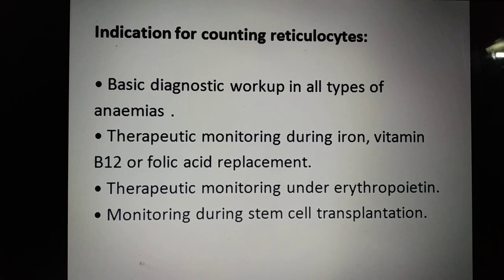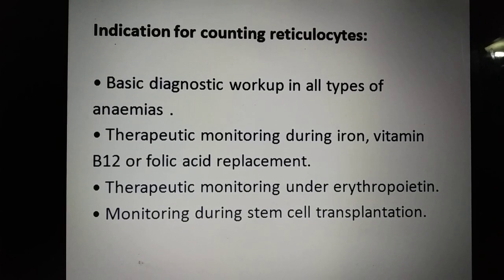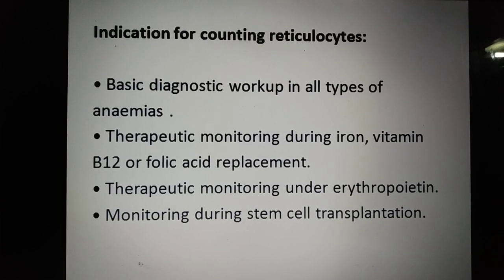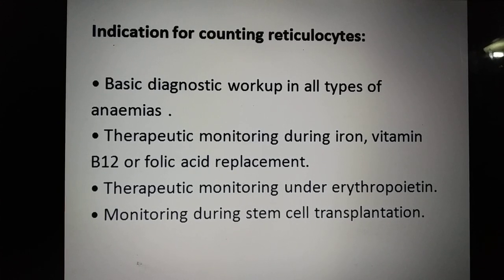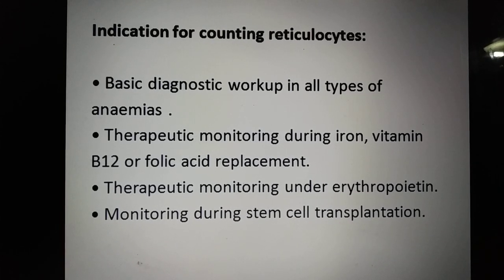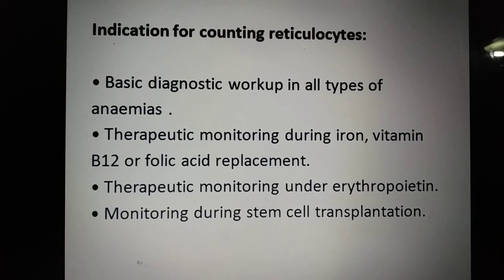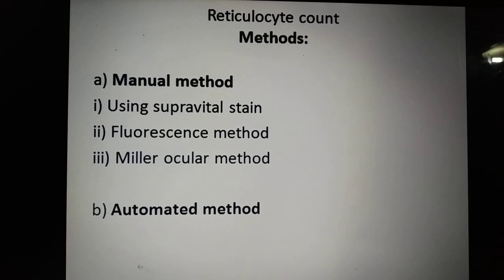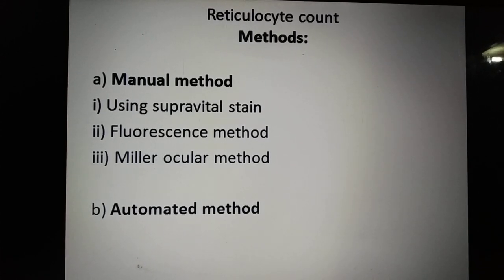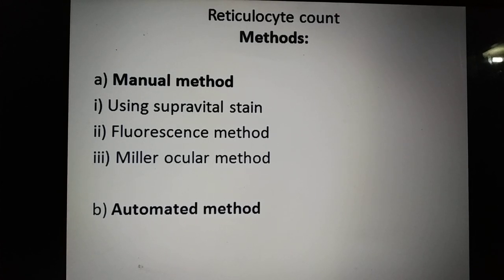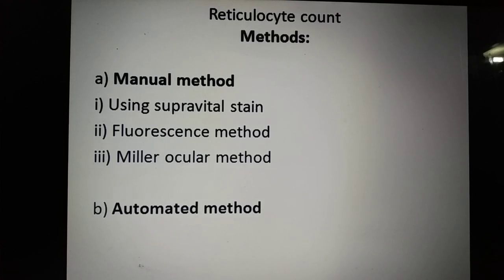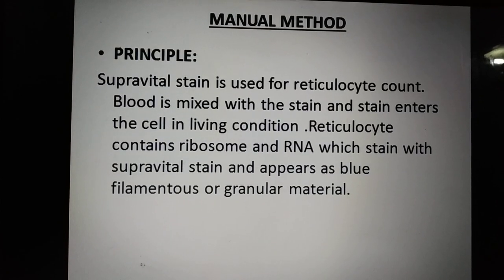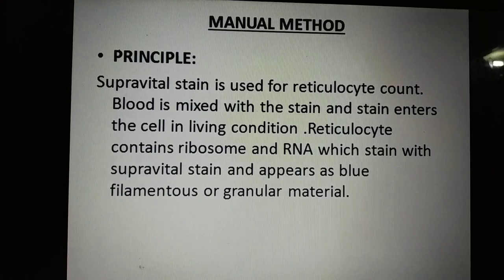Reticulocyte count is one of the basic diagnostic workups in all types of anemia. It is also used for therapeutic monitoring during iron, vitamin B12, or folic acid replacement, as well as under erythropoietin therapy and during stem cell transplantation. There are several methods: the manual method and the automated method. In the manual method, we use supra vital stain, a fluorescence method, and the Miller ocular method. For practical purposes we use the manual supra vital stain method.